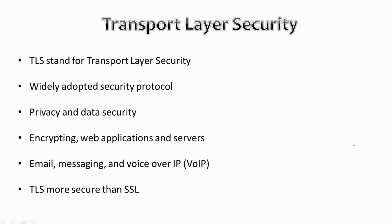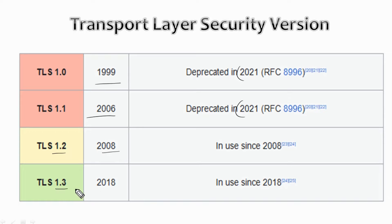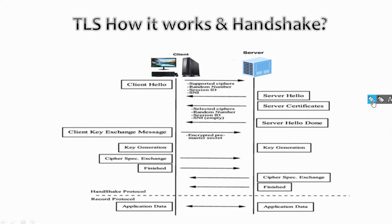TLS is like SSL but it has more security than SSL. Moving on, let's look into the versions of TLS: version 1.0 was introduced in 1999, version 1.1 introduced in 2006 and got deprecated in 2021. Now we are using version 1.2 since 2008 and version 1.3 since 2018 up till now.